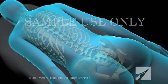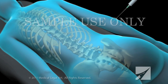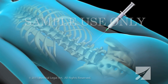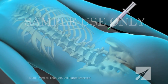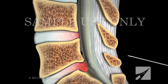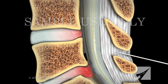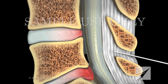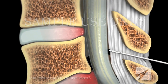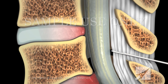An epidural steroid injection is a minimally invasive procedure. To begin, your doctor will numb the skin on your back with a local anesthetic. Using an x-ray image for guidance, your doctor will insert a needle between the bones and through the ligaments of your spine until it reaches the epidural space at the level of the inflammation.